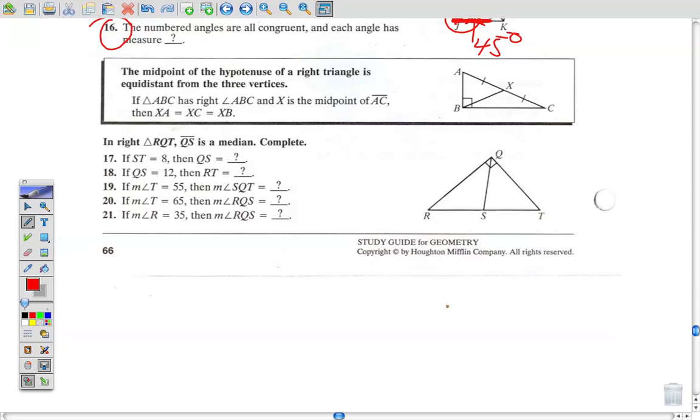All right, 17 through 21. Now we're using this here. Let's start with 17. If ST is 8, what's QS? Well, they're telling you that QS is a median. This is a median. It's hitting the midpoint of the opposite side. What is this side? It's a hypotenuse. Now what do you know about the hypotenuse in the right triangle? If you've got the midpoint of the hypotenuse, this part is the same distance as this part, which is the same distance as that part. So if ST is 8, then QS is 8. And that's kind of how these are working.